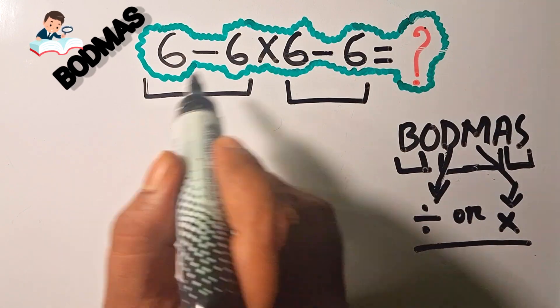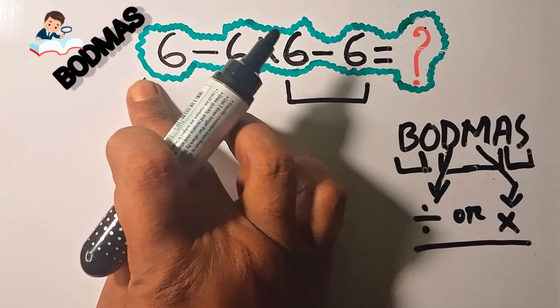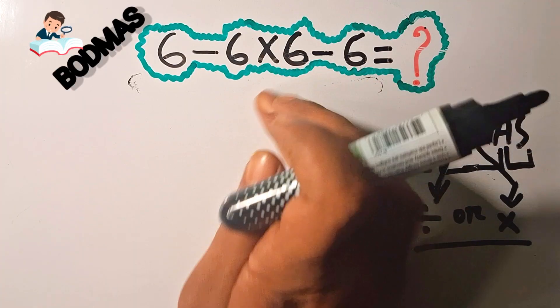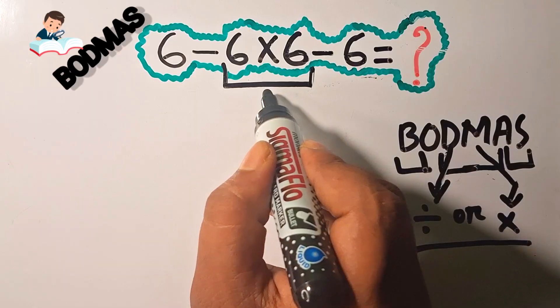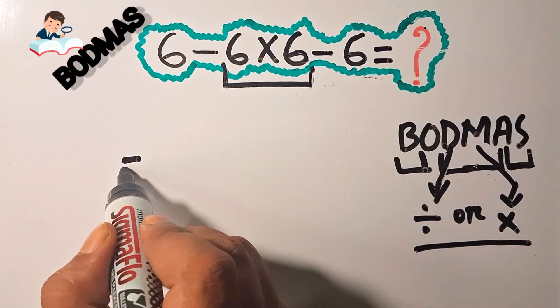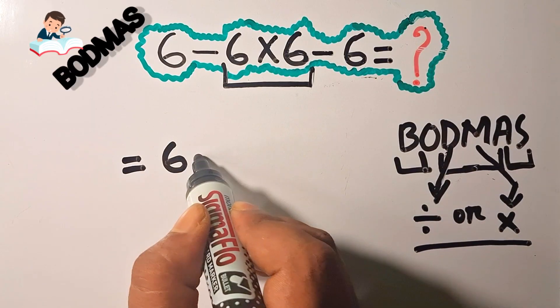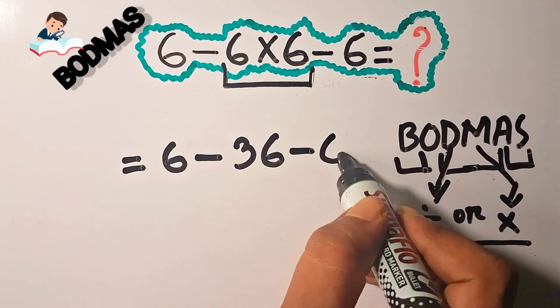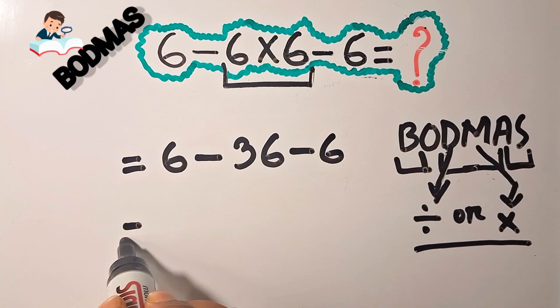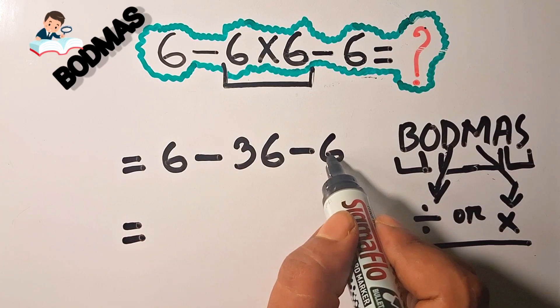First, here bracket and of are absent, only multiplication and subtraction remain. So first we'll do multiplication according to the BODMAS rule. 6 into 6 is 36. Then we will do the remaining subtraction part.